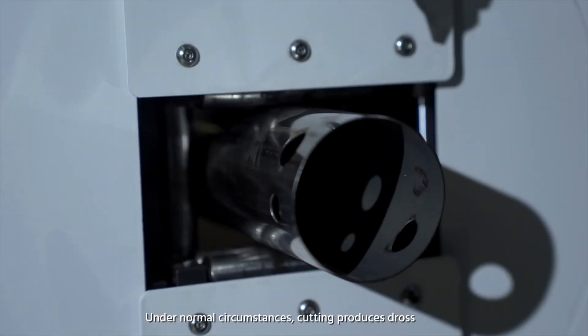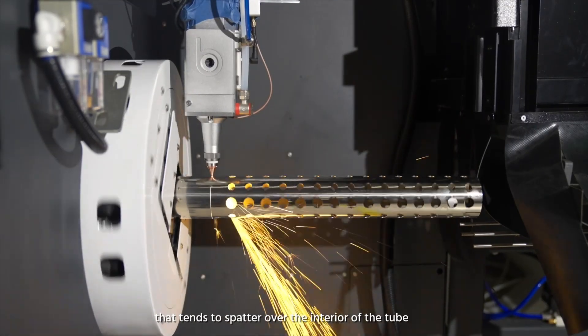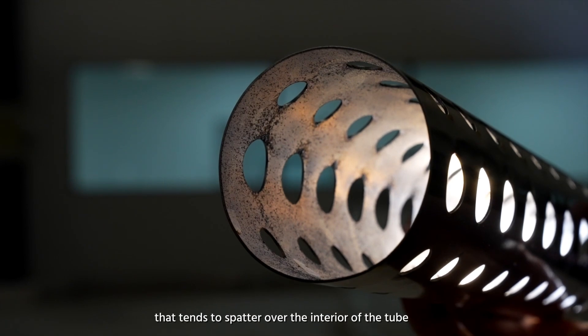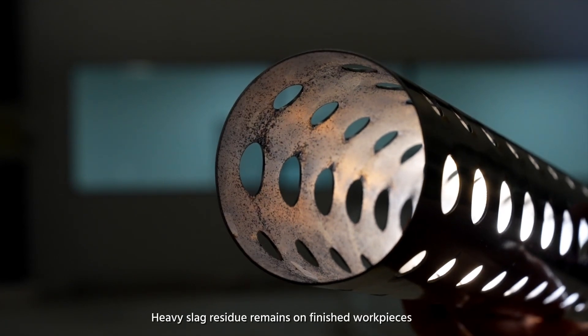Under normal circumstances, cutting produces dross that tends to spatter over the interior of the tube. Heavy slag residue remains on unfinished workpieces.